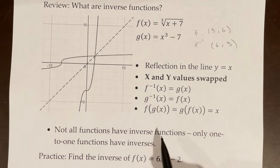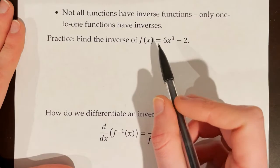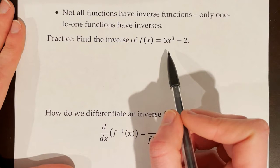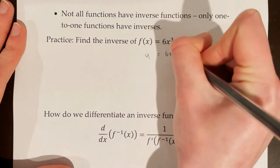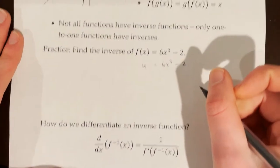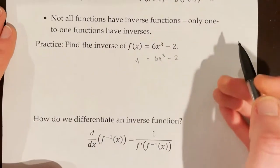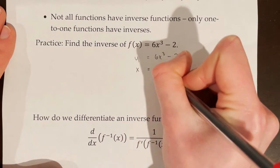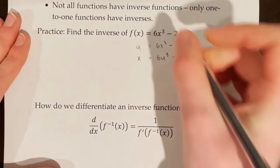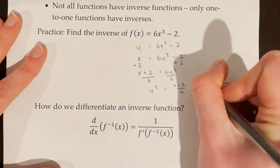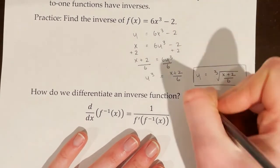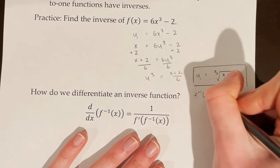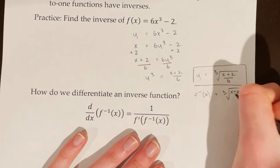Not all functions have inverses — only one-to-one functions have inverses. There can be an inverse for a function that's not one-to-one, but it needs a restricted domain. Let's practice by finding the inverse of f of x equals 6x cubed minus 2. First, rewrite it as y equals 6x cubed minus 2, then switch the x and y variables, because on inverse functions the x and y values are swapped. So write x equals 6y cubed minus 2, then isolate y. Our inverse function is y equals the cube root of x plus 2 over 6, or f inverse of x equals the cube root of x plus 2 over 6.